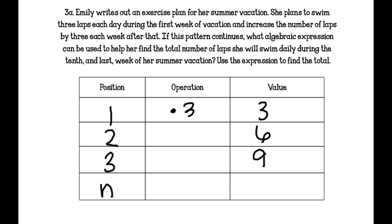If you multiply by 3, the number of weeks she's at, you can know how many laps she's swimming. So your algebraic expression would be 3n. And, how many would she swim daily during the tenth and last week? You would do 3 times 10, because that's 10 weeks. 3 times 10 is 30 laps.